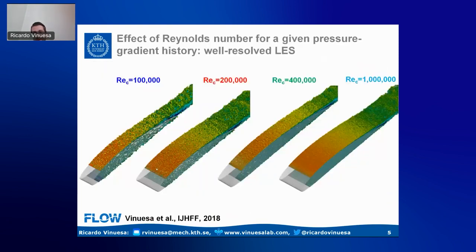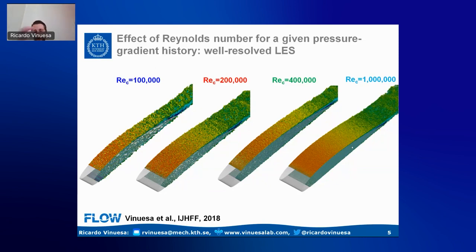What we have been doing in the past years — published in 2018 in the Journal of Heat and Fluid Flow — is looking at these high-fidelity simulations for a wide range of Reynolds numbers, going from 100,000 all the way up to 1 million. This allows us to see the progressive increase of scale separation and complexity, and to really understand the complex effects of curvature, pressure gradients, shear layers, wakes, and transition to turbulence.